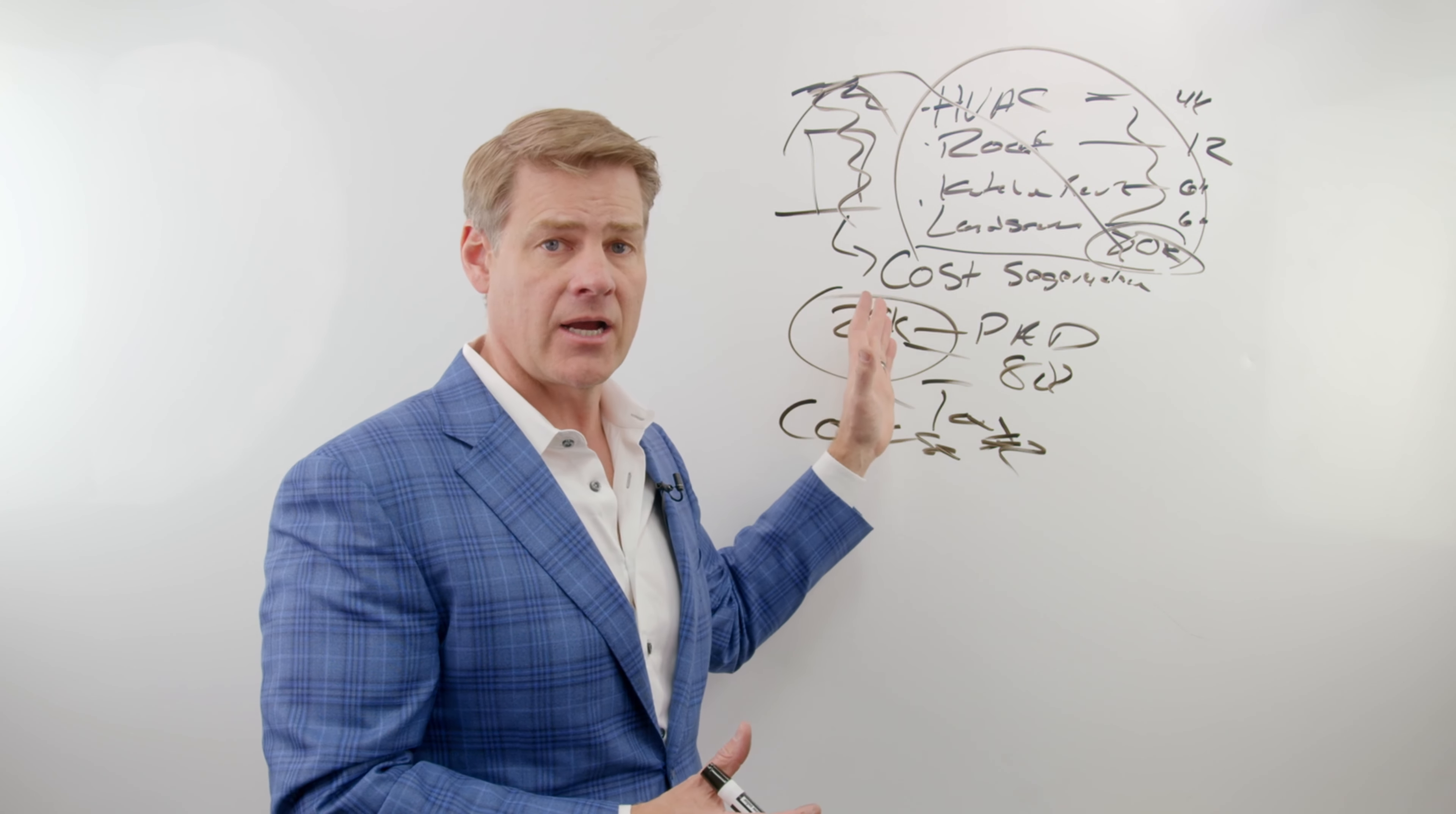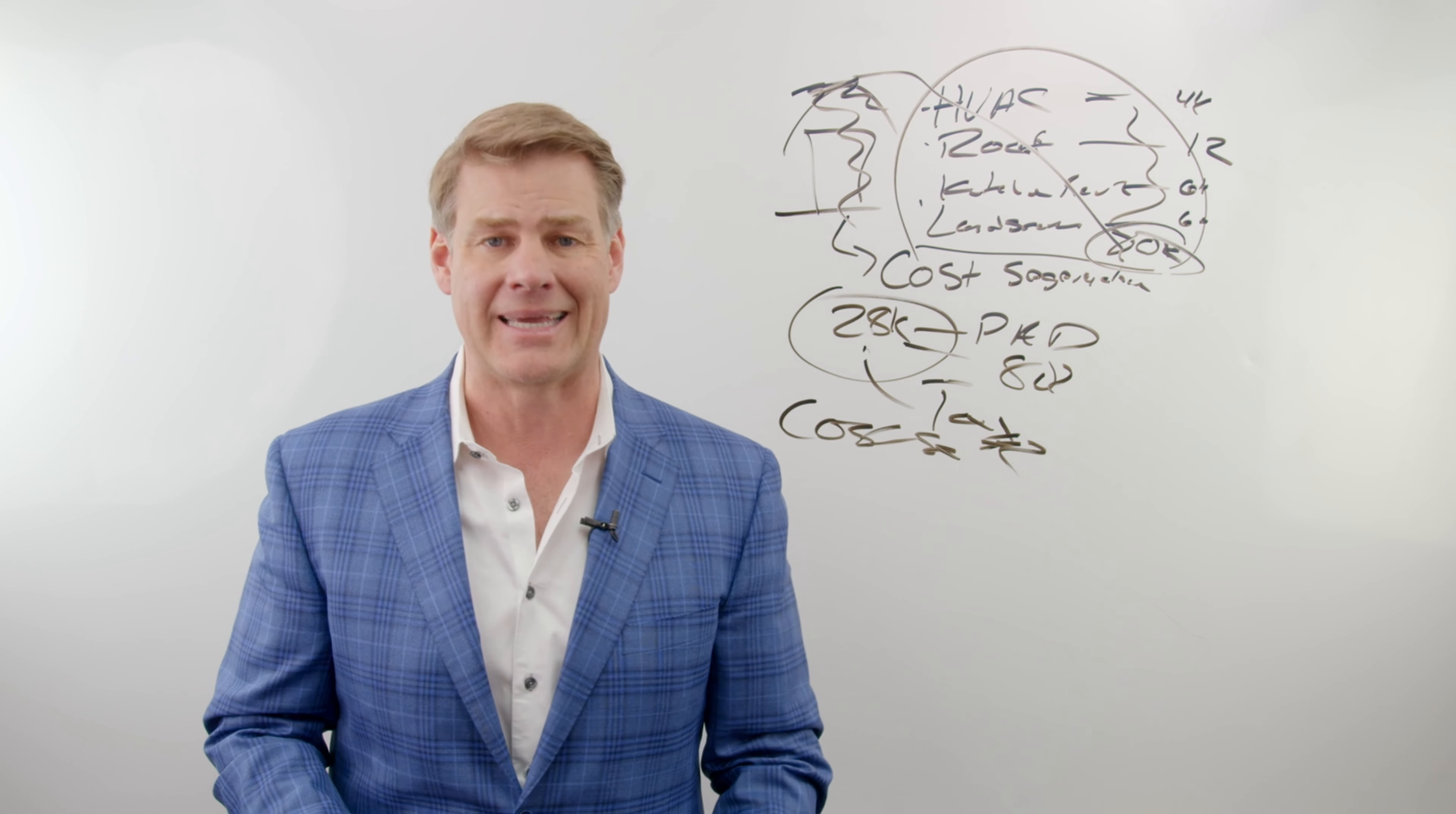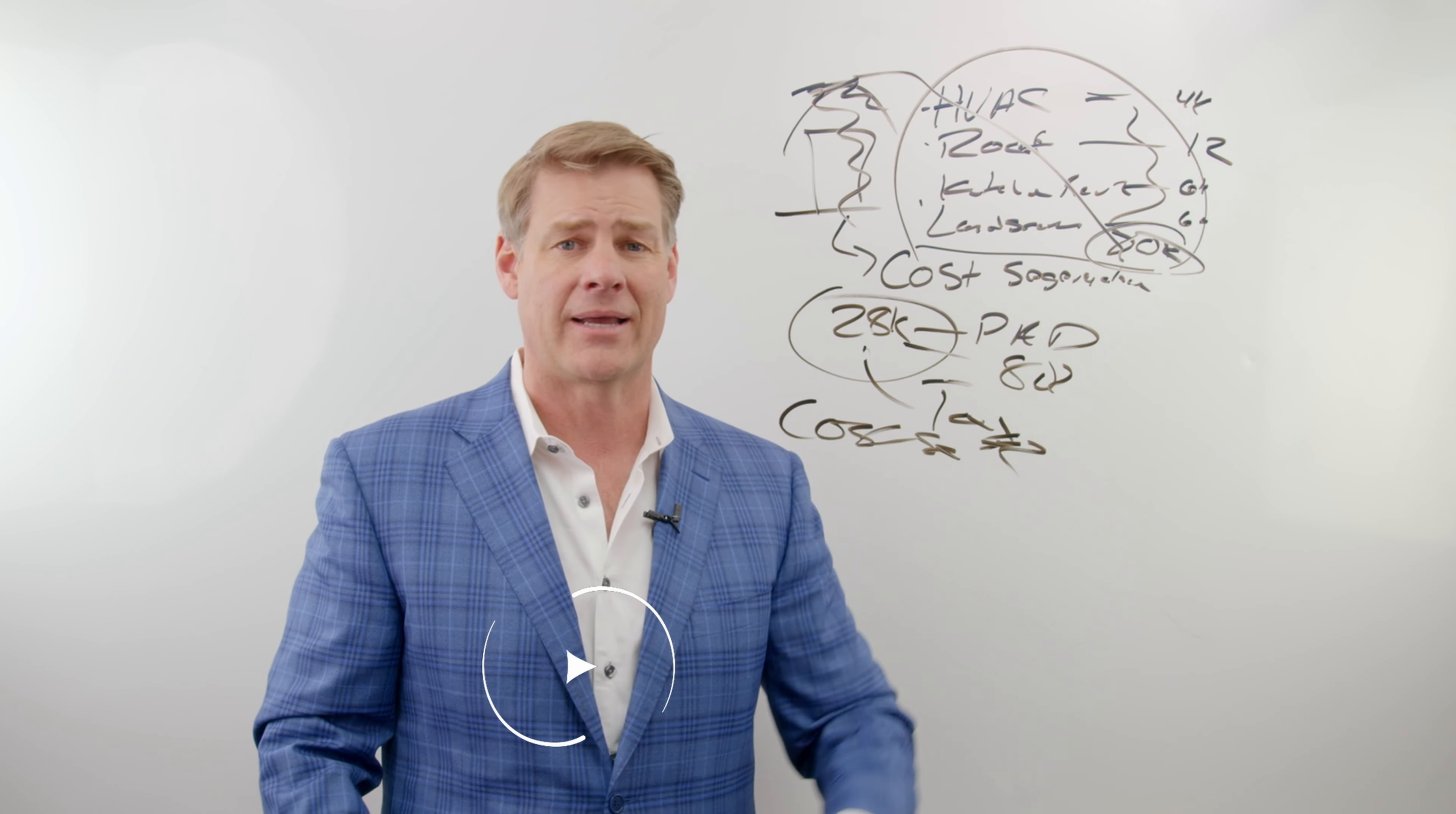Before you do it, run a cost seg on it, figure out what you're going to be ripping out. If it makes sense, go through with it, pick up that deduction, come back and do it again. Same year, pick up another huge tax deduction, take that money to the bank, put it in your account and go out and buy another piece of property.